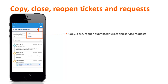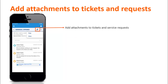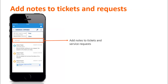On the Activity Timeline or Details page, the Actions menu enables users to copy and close the ticket or service request. Users can also reopen closed tickets or service requests. The Edit option is available only for submitted service requests based upon the configuration settings by the system administrator. For open tickets and service requests, users can upload files or add notes, though the ability to add notes and attachments also depends upon the administrator's configuration settings.